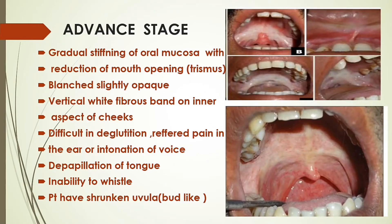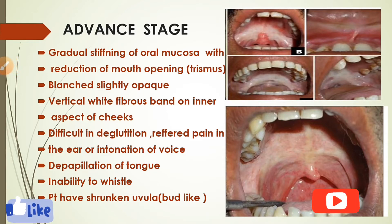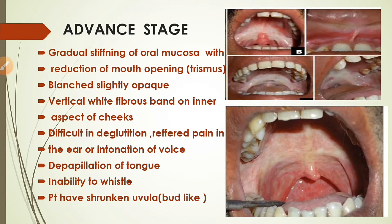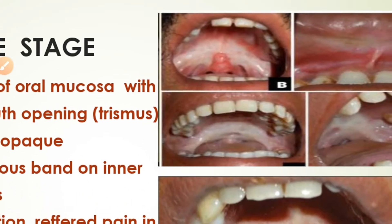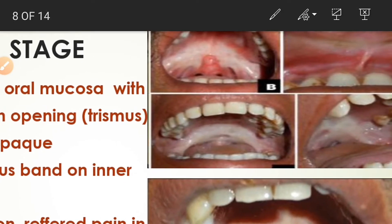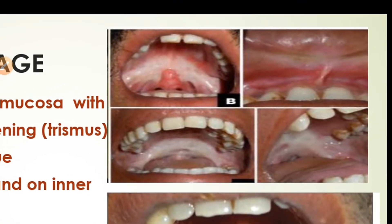In the advanced stage, there is gradual stiffening of the oral mucosa with reduction of mouth opening — this difficulty in mouth opening is called trismus. The affected area becomes blanched, meaning pale or white in color, as seen in the picture where the palate appears blanched. There are also vertical white fibrous bands on the inner aspect of the cheeks.